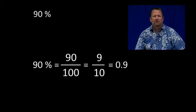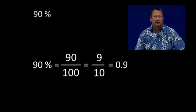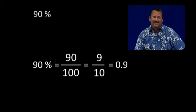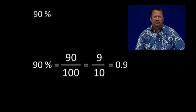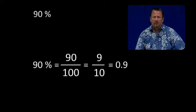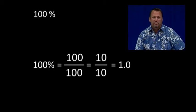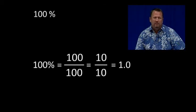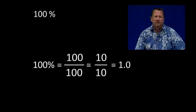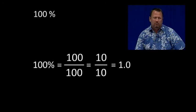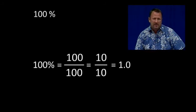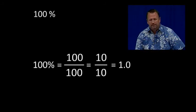90% is equal to 90 hundredths, which is equal to 9 tenths, which is equal to 0.9. 100% is equal to 100 over 100, which is equal to 1, which is equal to 1.0. 100% is equal to 1.